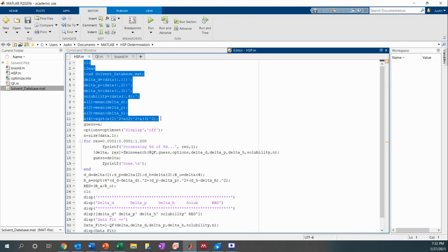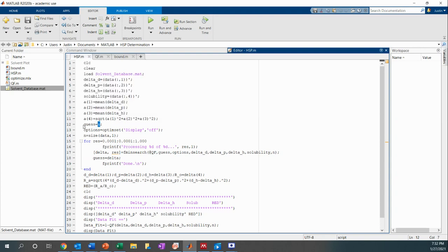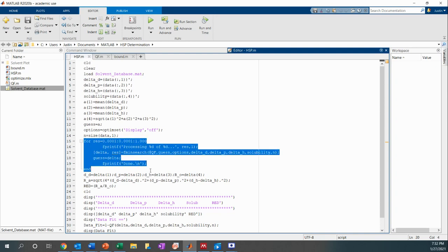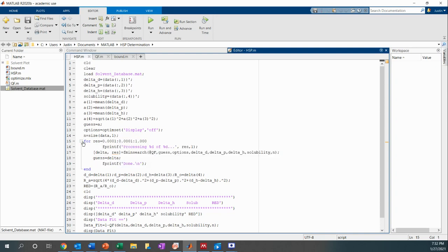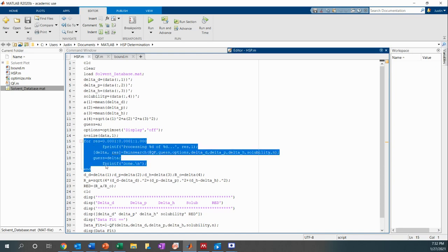First, this whole section here, it just takes all of the inputted values, delta D, delta P, delta H, and it finds the average of all of that, and it stores that average as guess. And so then it undergoes this optimization function right here. So originally, with the Gharaghese algorithm, this was a while function. However, I changed it to a for, just so there's kind of a numerical end to it rather than just running countless times. Because with the while function, it would take hours to come out with an output if the data fit was less than one.